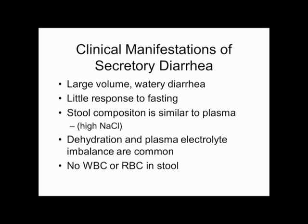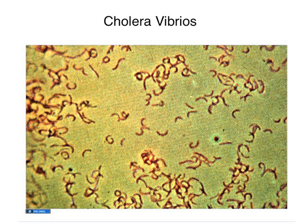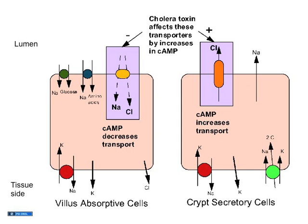Secretory diarrheas are not inflammatory disorders — there are no ulcers and the mucosa isn't damaged, so you don't get white cells or red cells in the stool. The classic secretory diarrhea is cholera. These are the Vibrio organisms — salty, freshwater organisms. They're not invasive; they stay in the gut lumen and just make toxins. The cholera toxin was one of the first that helped unravel these secretory processes.